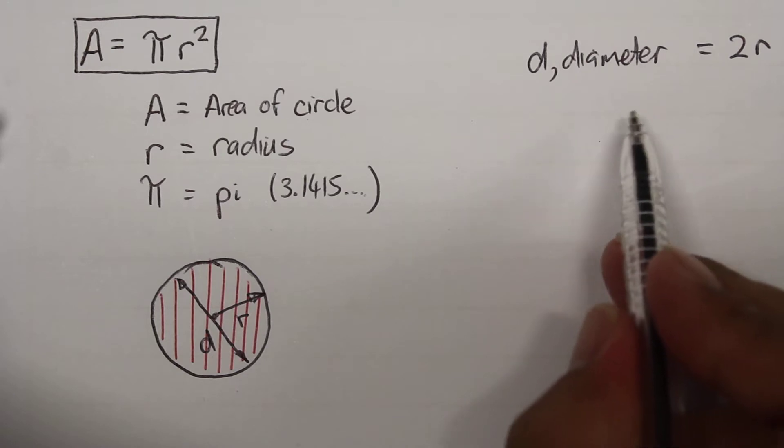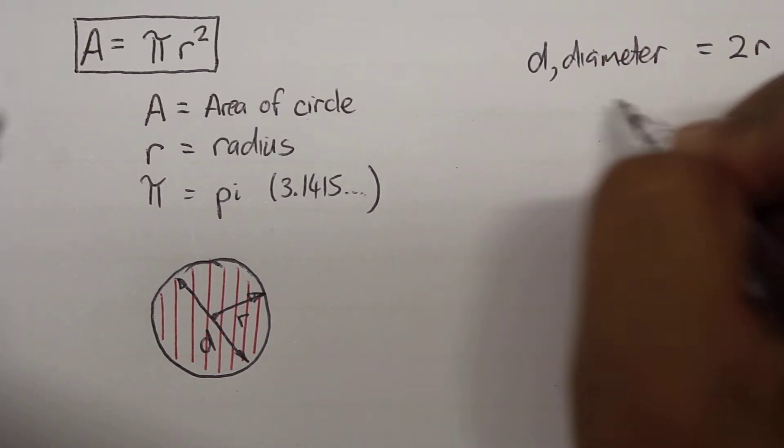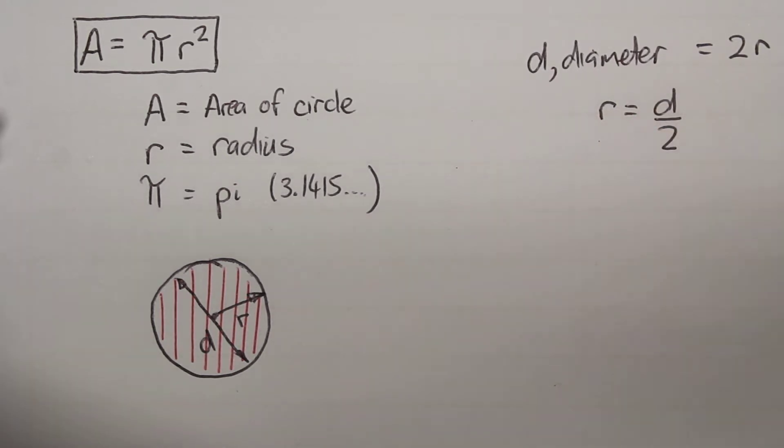We can rearrange that equation. So we get radius is equal to d divided by 2.